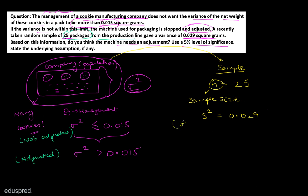Some textbooks use the notation sigma-hat squared for sample variance; I'll use s squared. Based on this information, we have to check whether the machine needs adjustment. The level of significance, alpha, is equal to 5%, which is 0.05. Because we are doing hypothesis testing, the first thing we must do is write the null hypothesis and the alternative hypothesis. From the language of the question, we have two claims on the population variance.